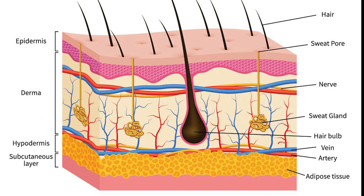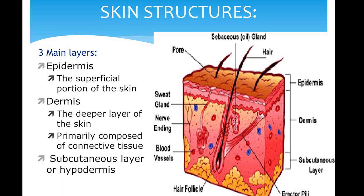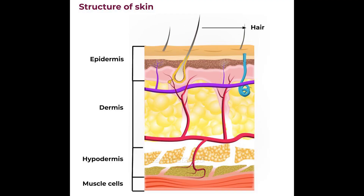The epidermis and dermis are separated by a thin sheet of fibers called the basement membrane, which is made through the action of both tissues. The basement membrane controls the traffic of cells and molecules between the dermis and epidermis, and also serves as a reservoir for cytokines and growth factors through binding, enabling their controlled release during physiological remodeling or repair processes.